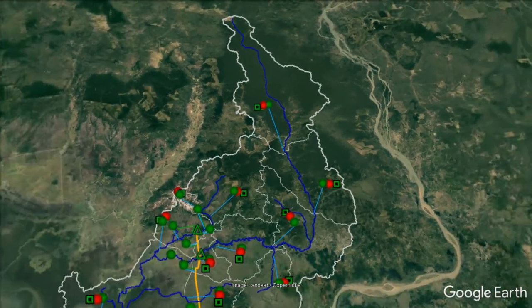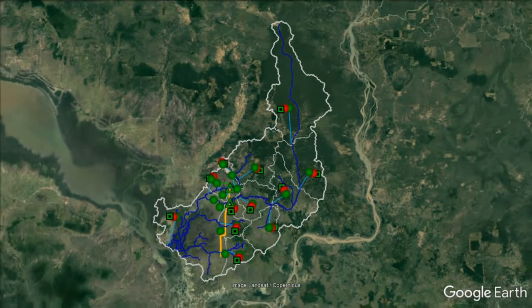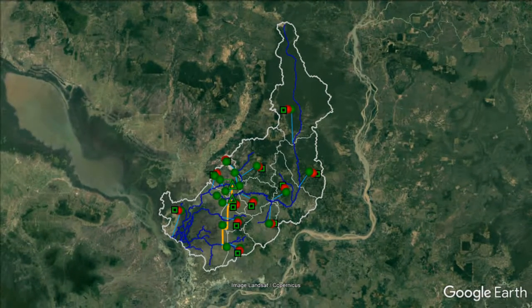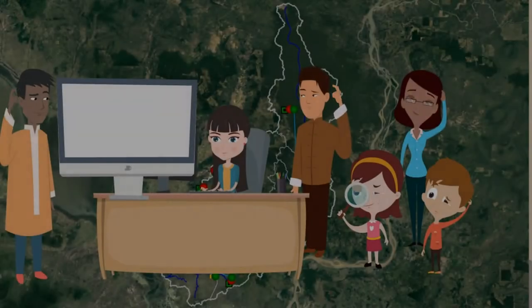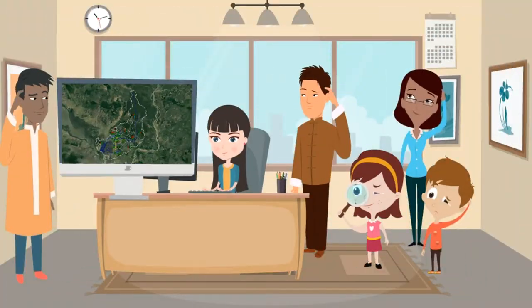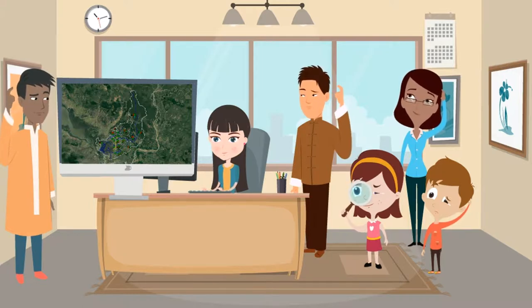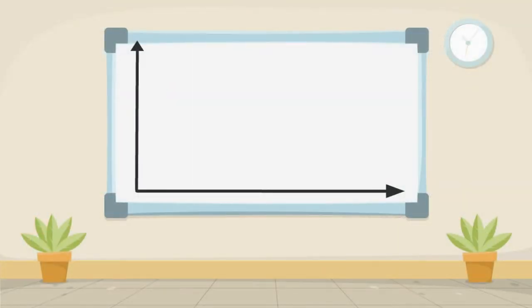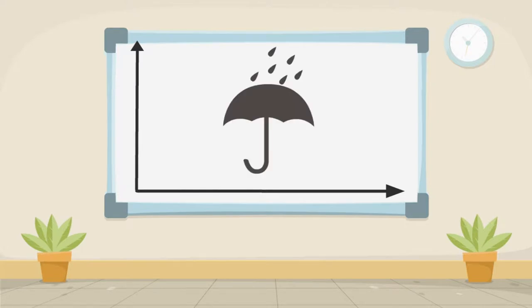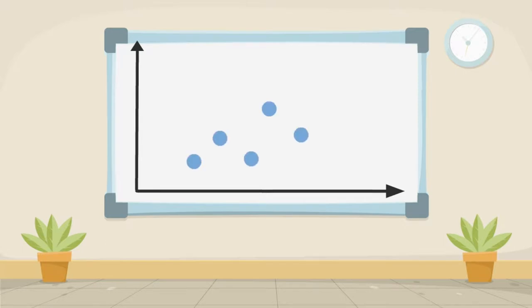Once our model is constructed, we make sure all of the main features of the watershed are well represented. When the model is complete, we run it. This is called a simulation. During a simulation, the model recreates reality at certain increments of time, called a time step. The Stung Chinit model runs at a weekly time step, which means the model calculates rainfall, stream flow, reservoir volume, irrigation, and other things each week. When we string together many weekly model results, we call this a time series.